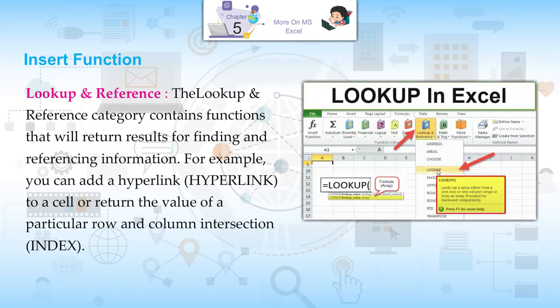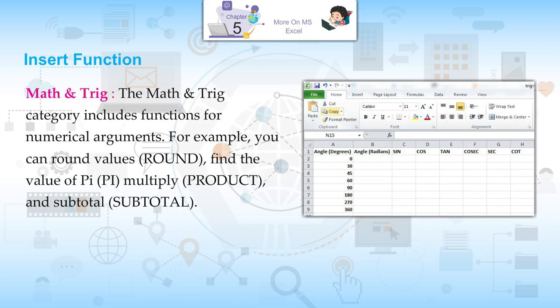Lookup and Reference: contains functions that return results for finding and referencing information. For example, you can add a hyperlink using HYPERLINK, or return the value of a particular row and column intersection using INDEX. Math and Trig: includes functions for numerical arguments. For example, you can round values using ROUND, find the value of pi using PI, multiply using PRODUCT, and subtotal using SUBTOTAL.